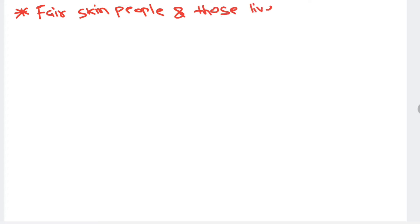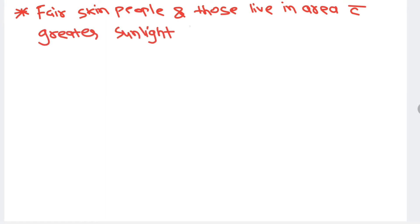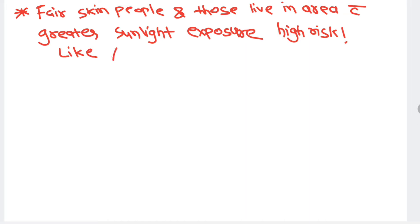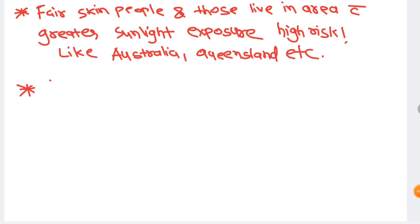Fair-skinned people and those living in areas with greater sunlight exposure have a high risk for UV-ray-induced cancer. Examples of such areas include Australia and Queensland, where people are fair-skinned and have greater sunlight exposure intensity.